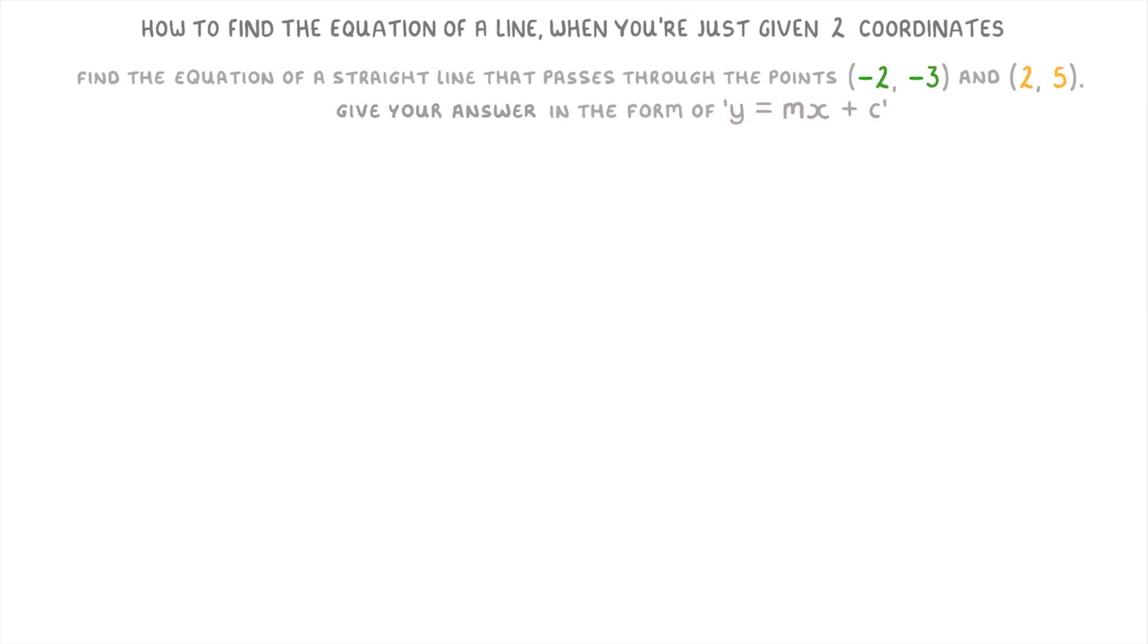Regardless of which technique we use, what we normally need to do when we're finding the equation of a line is find m and c, because we want our equation to look something like this where m and c are actual numbers but y and x stay as y and x.